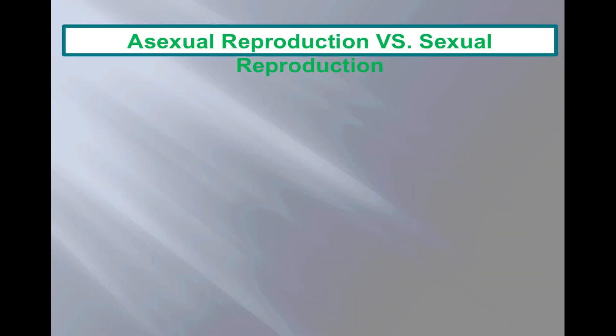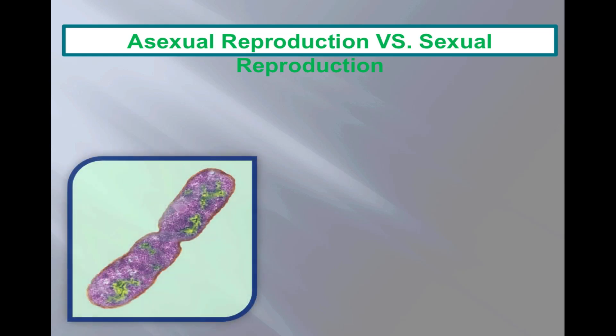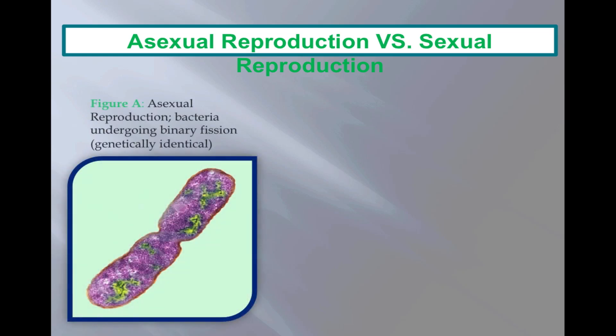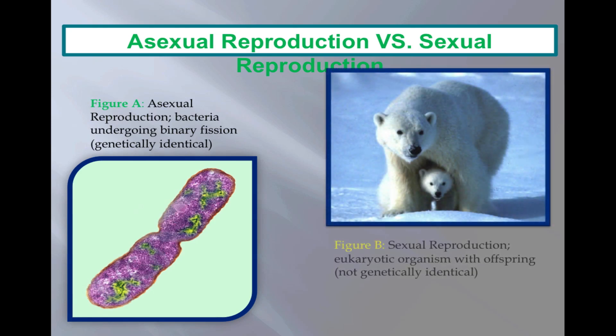Asexual reproduction versus sexual reproduction. Asexual reproduction gives rise to genetically identical offspring and only one parent exists. Bacteria, for example, undergoes binary fission, an example of asexual reproduction. In sexual reproduction, the offspring are not genetically identical and two eukaryotic organisms are required.